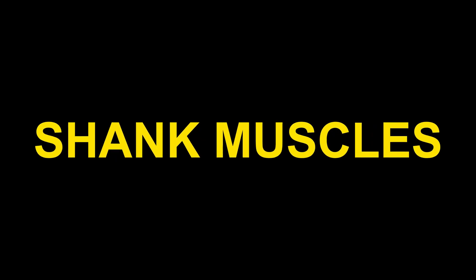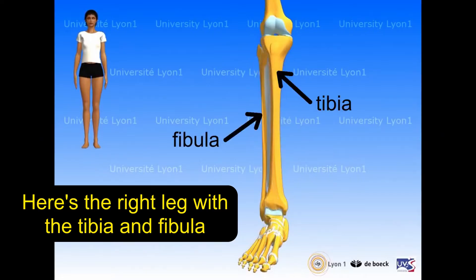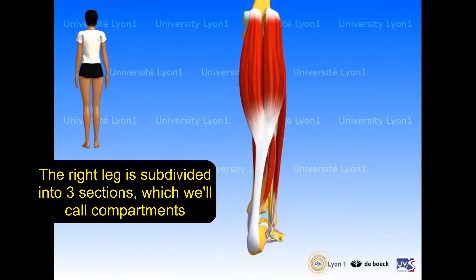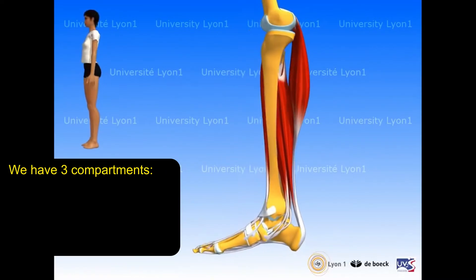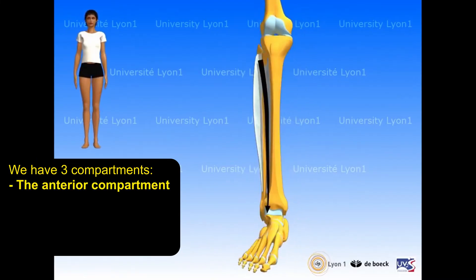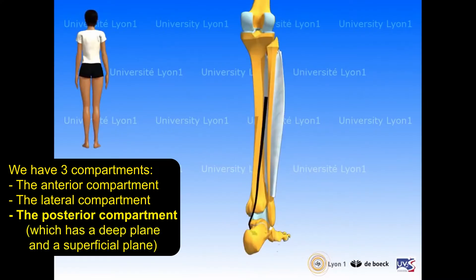Shank muscles. Here's the right leg with the tibia and fibula. The right leg is subdivided into three compartments: the anterior compartment, the lateral compartment, and the posterior compartment, which has a deep plane and a superficial plane.